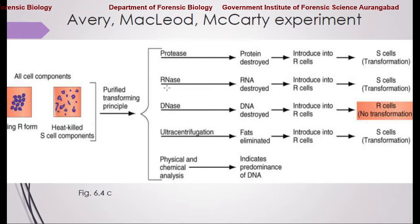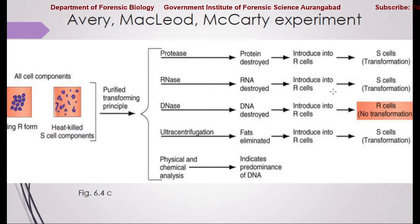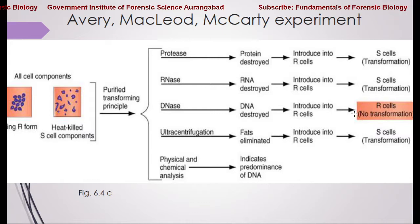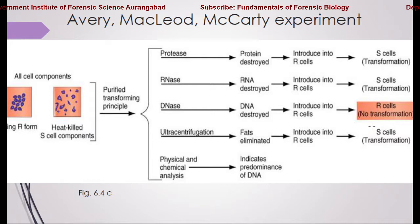In the third experiment, they used DNase, the enzyme that specifically cleaves DNA. The DNA was destroyed. When that mixture was introduced into healthy mice, the transformation did not take place, and from the live mice they recovered only the R strain — the rough strains of Streptococcus pneumoniae. This clearly showed that when DNA is destroyed, transformation cannot occur.